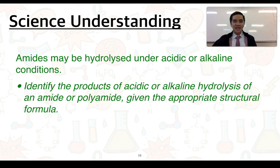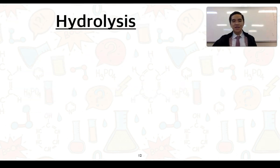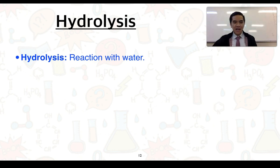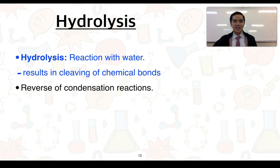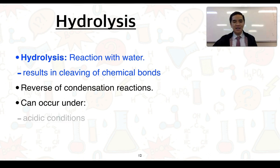For our last science understanding, amides may be hydrolyzed under acidic or alkaline conditions. You'll need to identify the products of acidic or alkaline hydrolysis of an amide or polyamide given the appropriate structural formula. Hydrolysis has been covered previously in 3.7 on esters, but as a reminder, hydrolysis involves a reaction with water and results in the cleaving of chemical bonds. We can think of hydrolysis reactions as the reverse of condensation reactions.